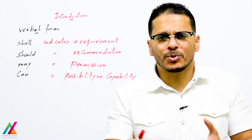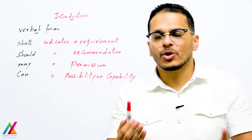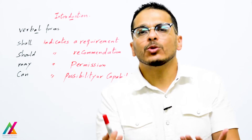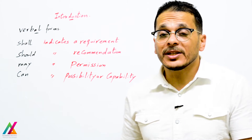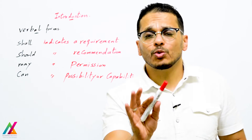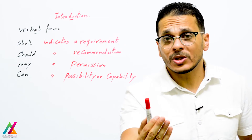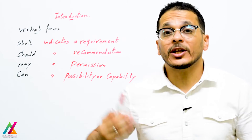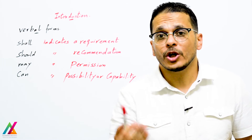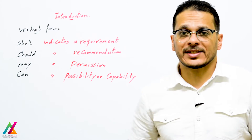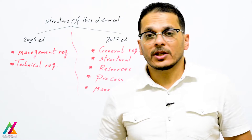'May' indicates permission — you are allowed to do this, and if you do it will improve something, but if you don't, nothing will happen. 'Can' indicates possibility or capability — you can do this, you are allowed to, and if you do it will improve something, so it is better for you to follow this.